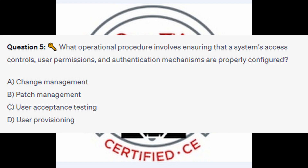Question number 5: What operational procedure involves ensuring that the system's access controls, user permissions, and authentication mechanisms are properly configured? Is it A Change Management, is it B Patch Management, is it C User Acceptance Testing, or is it D User Provisioning?